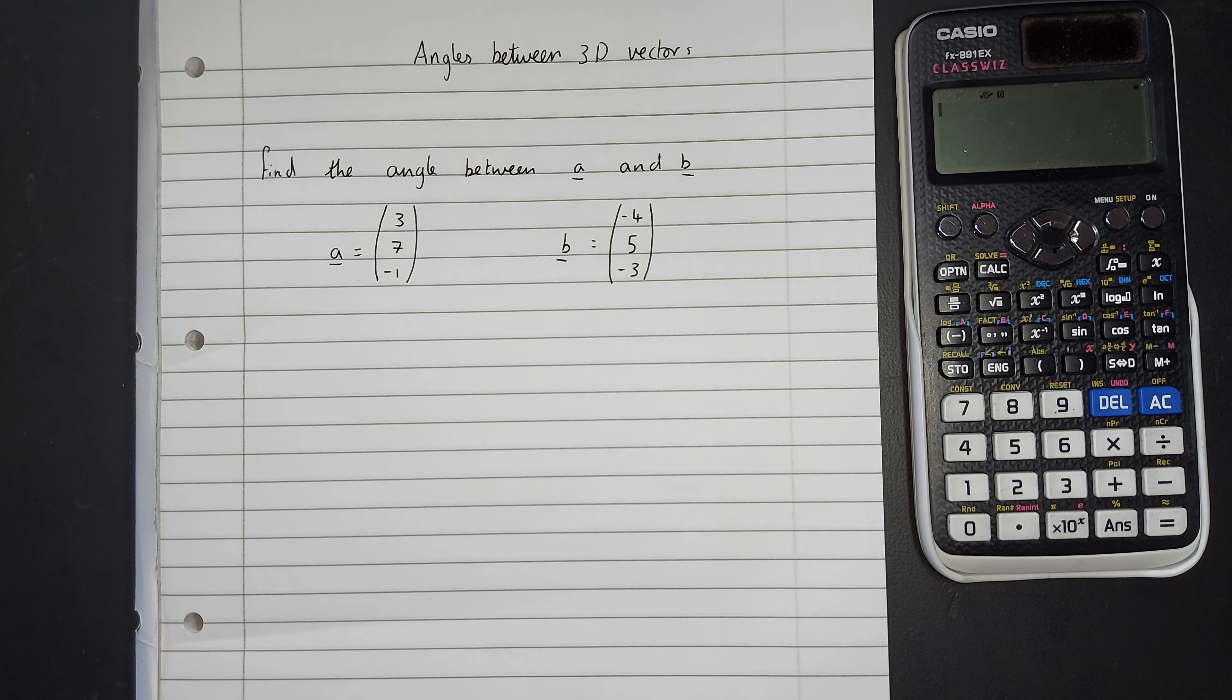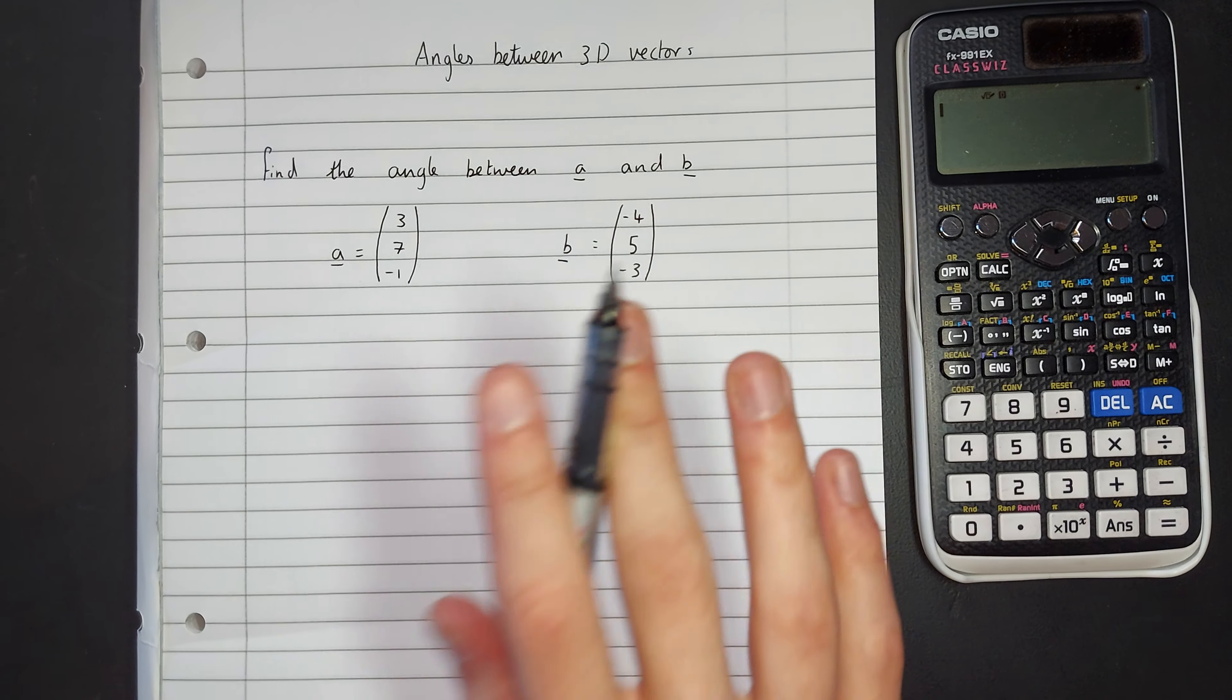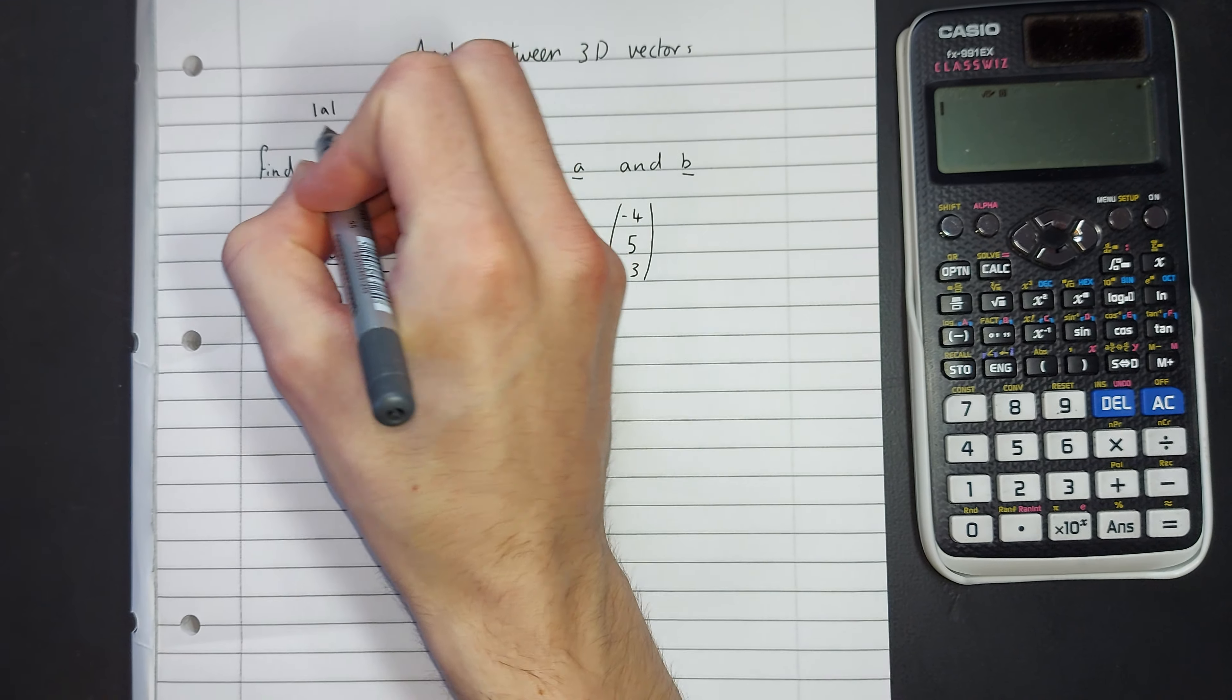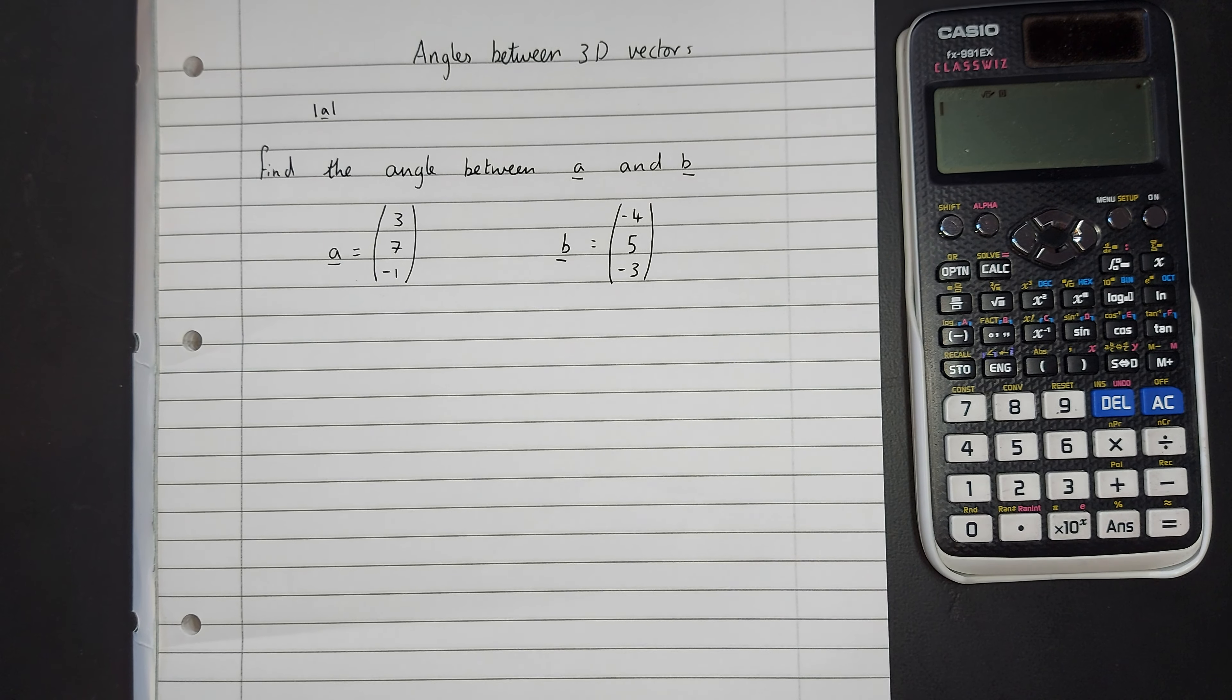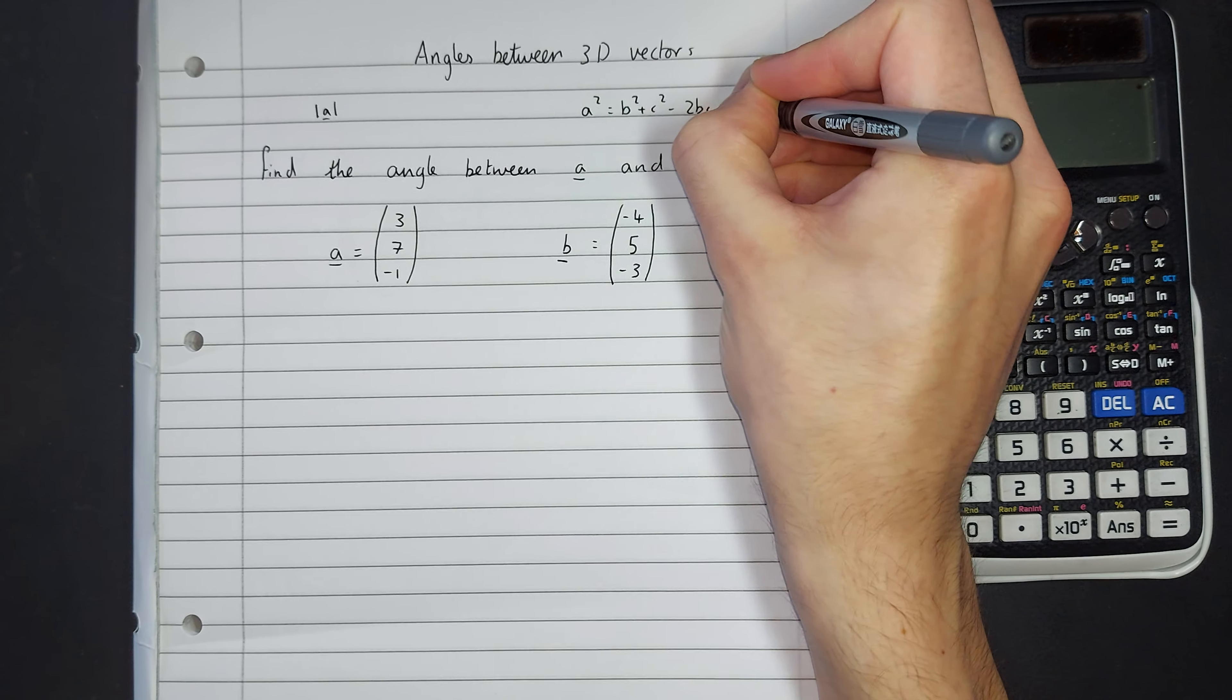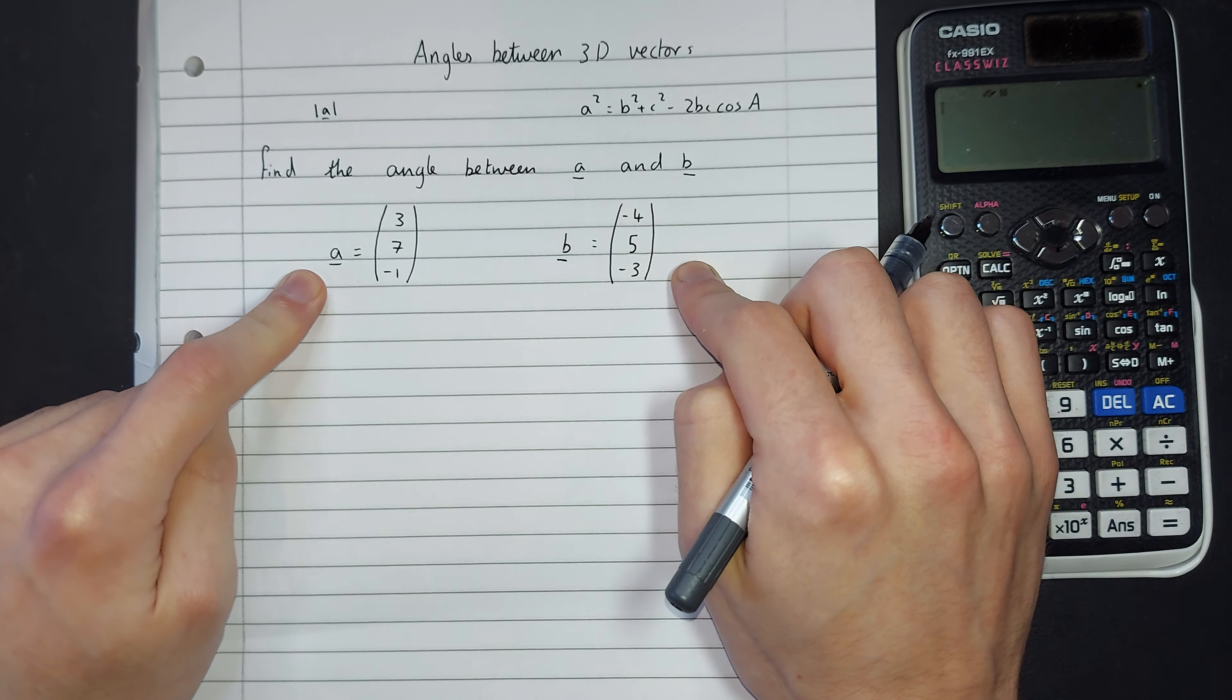We're going to be looking at angles between 3D vectors, using this question as an example to show you how to find the angle. First of all, before we even start that, you need to be confident with how to find the magnitude of a vector. And also you need to be confident with cosine rule. You need to remind yourself, so that looks like a squared equals b squared plus c squared, take away 2bc cos a. If you're confident with these two things, then applying them to this is how you find the angle.